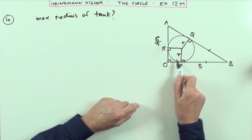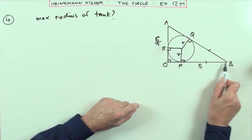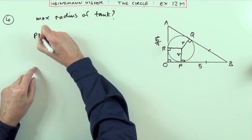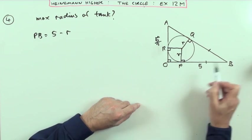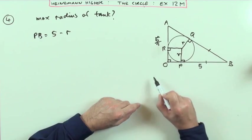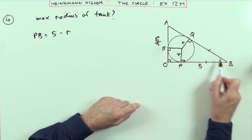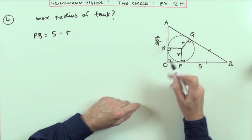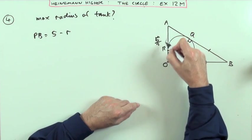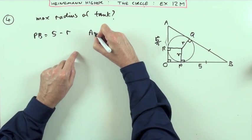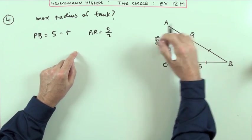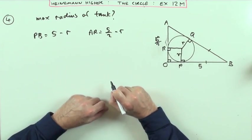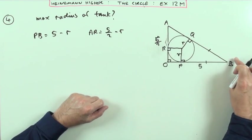I know that if the radius is r, it must be r in, so the part pb must be 5 minus r. I want an expression for bq. Well bq would be the hypotenuse minus this part. I can put it over here - ar is going to be 5 over 2 being the whole lot minus the radius minus r.